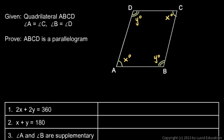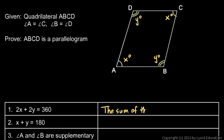Here are the steps of the proof. First, 2x plus 2y has to be 360. This plus this is 2x, plus that plus that is 2y. 2x plus 2y has to be 360 because all the angles of a quadrilateral always add up to 360 degrees — the sum of the angles must be 360 degrees because it's a quadrilateral.